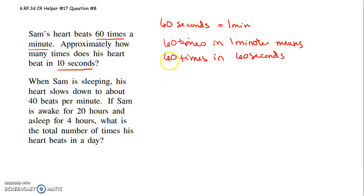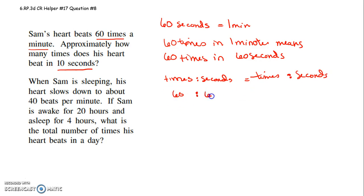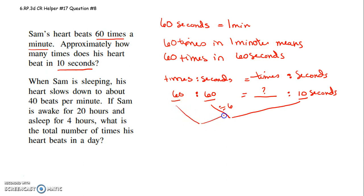So if it's 60 times in 60 seconds, and I want to know how many times in 10 seconds, I could set up times per seconds equals times it beats per seconds. I know it's 60 times in 60 seconds, and I'm asking how many times in just 10 seconds. How do I get from 60 to 10? I divide by 6. So I divide 60 by 6 — it's 10 times in 10 seconds. 60 times in 60 seconds, so it makes sense that it would be 10 times in 10 seconds.